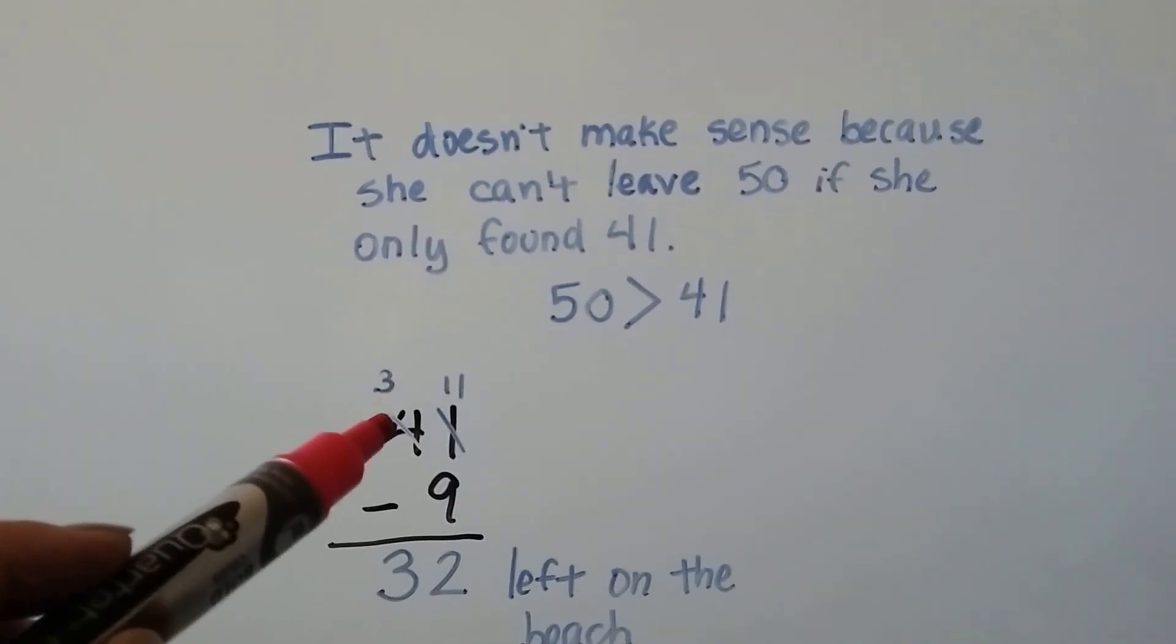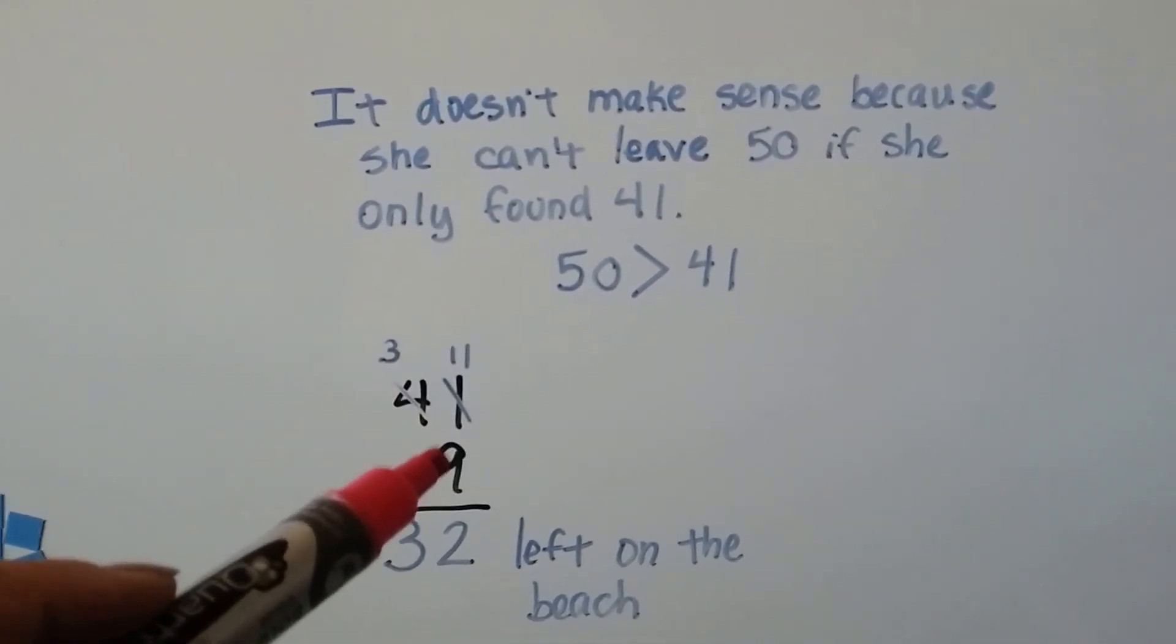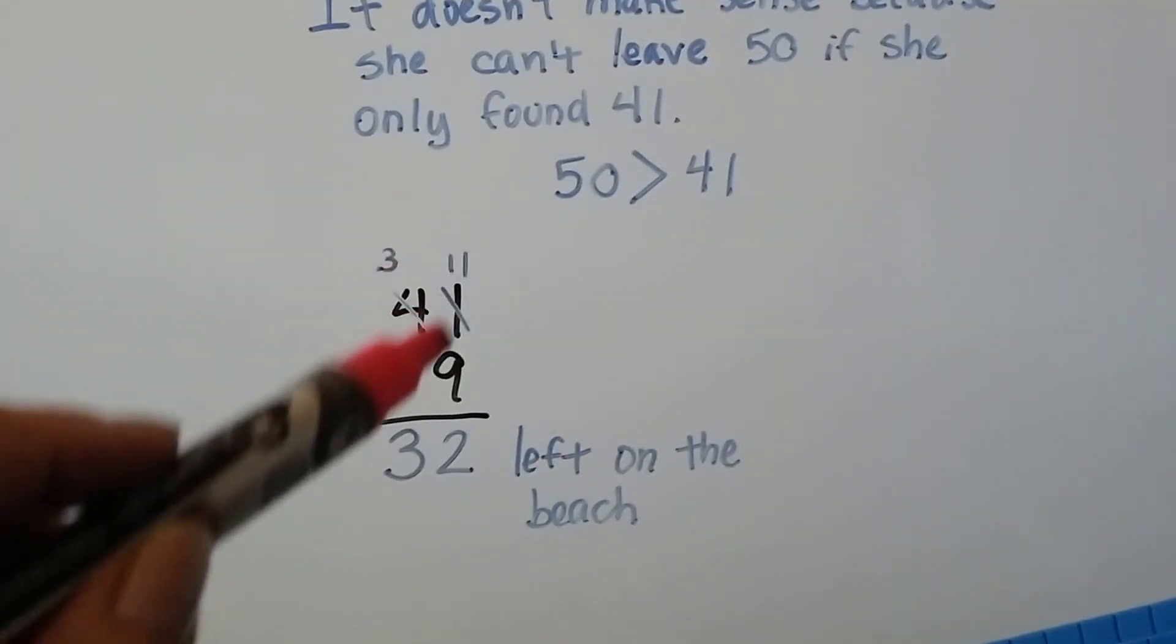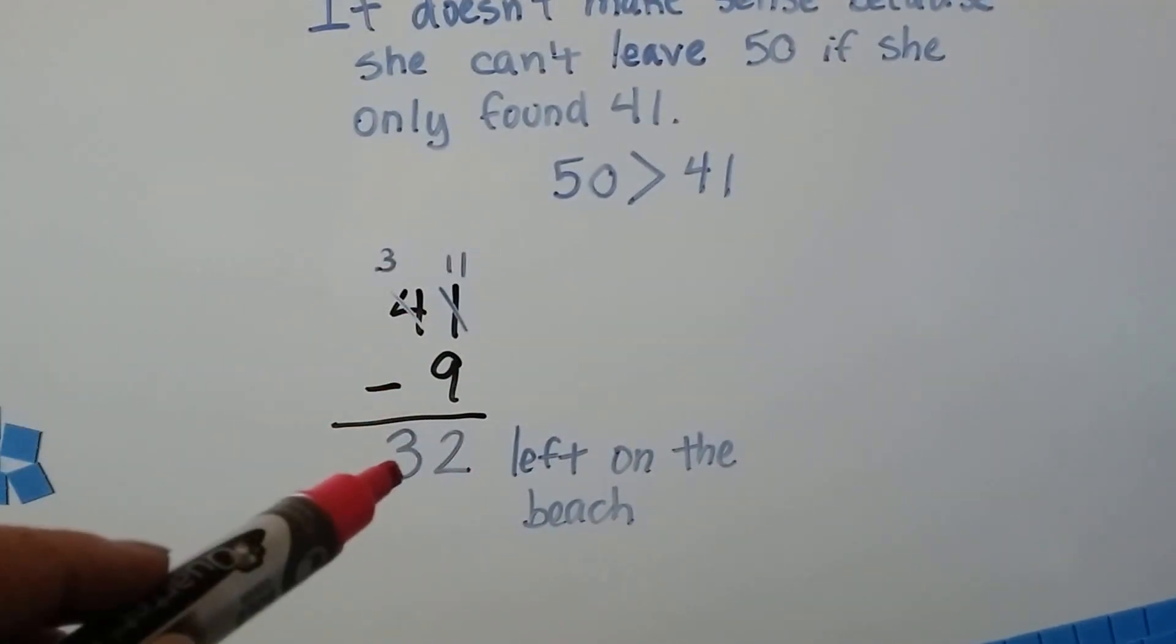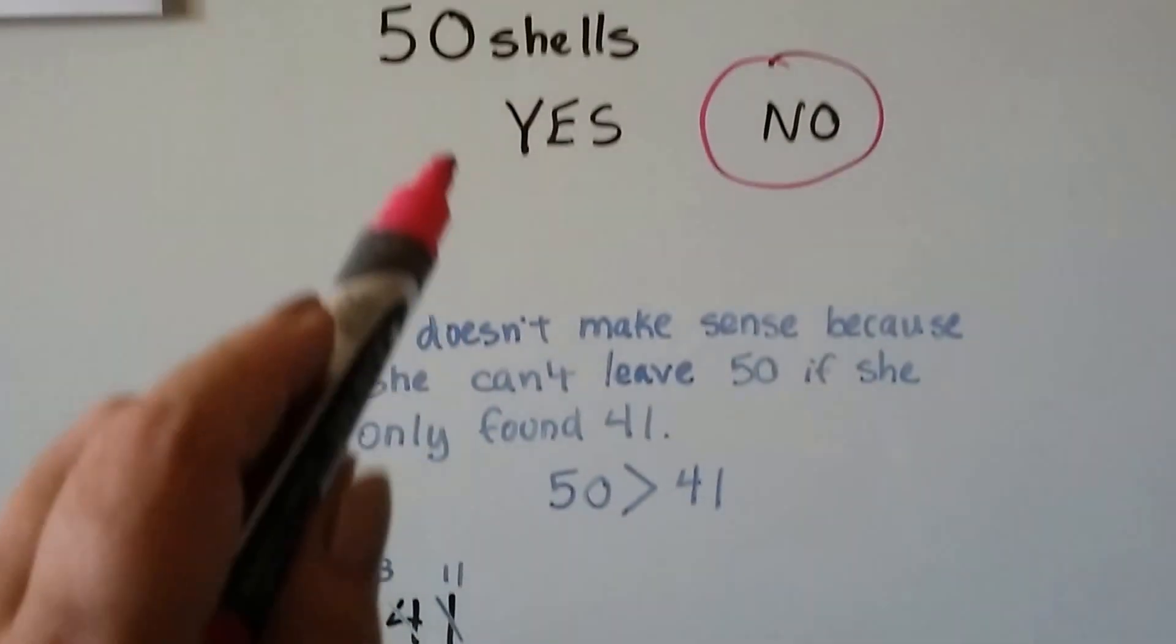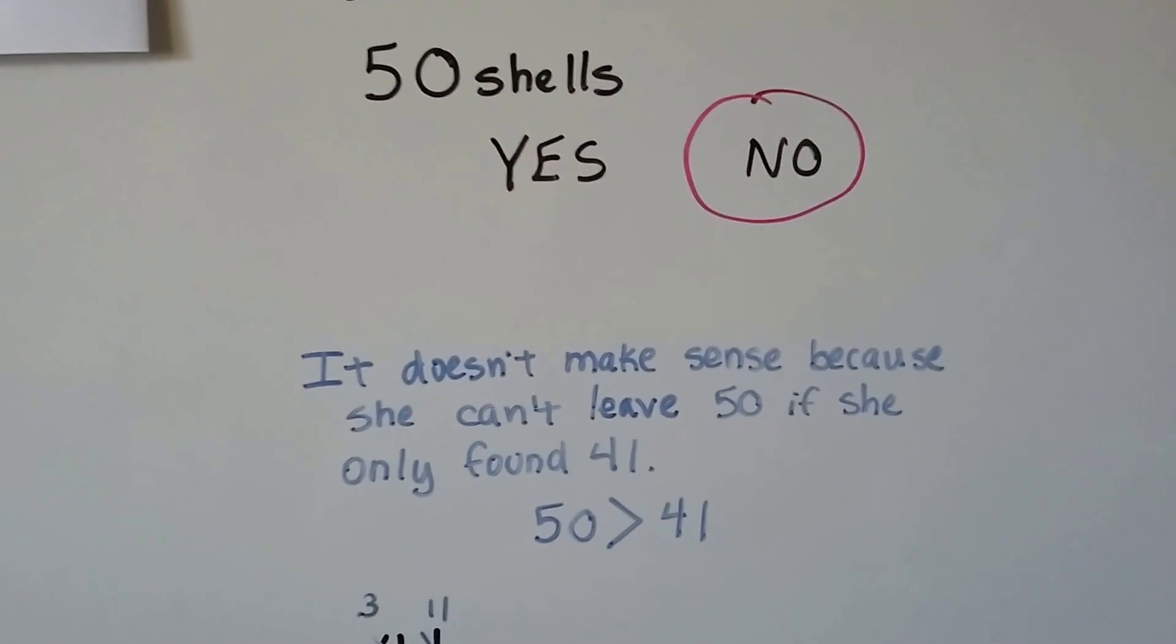If she found 41 and she kept nine of them, we regroup the four as a three and the one becomes an 11. 11 take away nine is two. We drop the three down. It's 32 left on the beach. So 50 doesn't make sense. She only found 41, right?